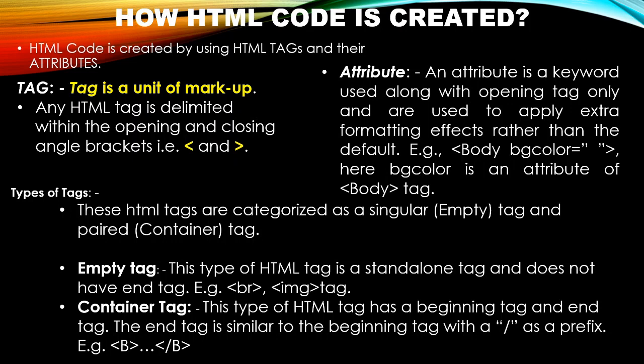The container tag has both an opening and a closing tag. The closing tag is similar to the opening tag, but with a prefix forward slash. An HTML tag that has a beginning tag and an end tag is called a container tag or paired tag. There are many paired tags provided by HTML 4.0 as well as the latest version, HTML 5.0.